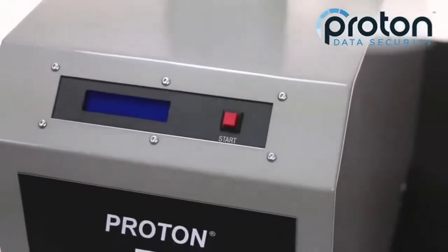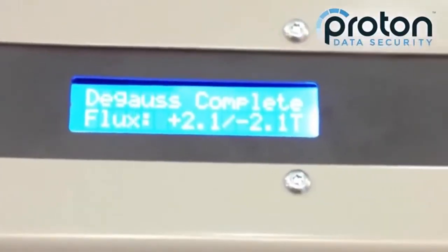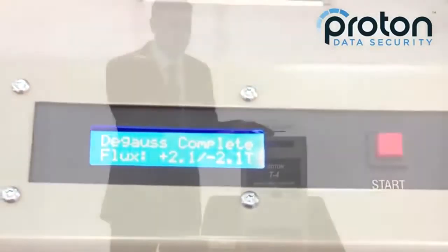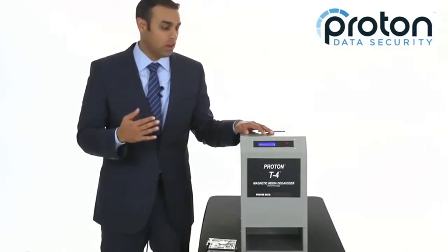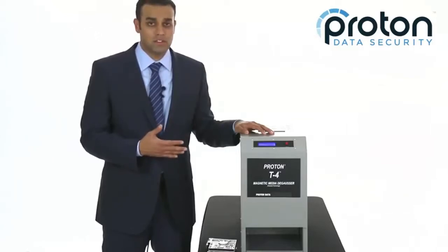As an added safeguard, the T4 has internal sensors which measure the field strength of each and every cycle and report it to the operator on this blue LCD screen. It will report both the positive and negative pulses so you see the bidirectional field, and this ensures that your degausser is working to NSA specs each and every cycle.